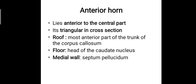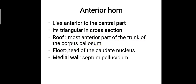The second part is the anterior horn, which lies anterior to the central part and in front of the interventricular foramen. It is triangular in cross-section when a coronal section is taken, having a roof, a floor, and a medial wall. The roof is formed by the most anterior part of the trunk of the corpus callosum. The floor is formed by the head of the caudate nucleus — the initial part of the caudate nucleus, which has a head, body, and tail. The medial wall is formed by the septum pellucidum.